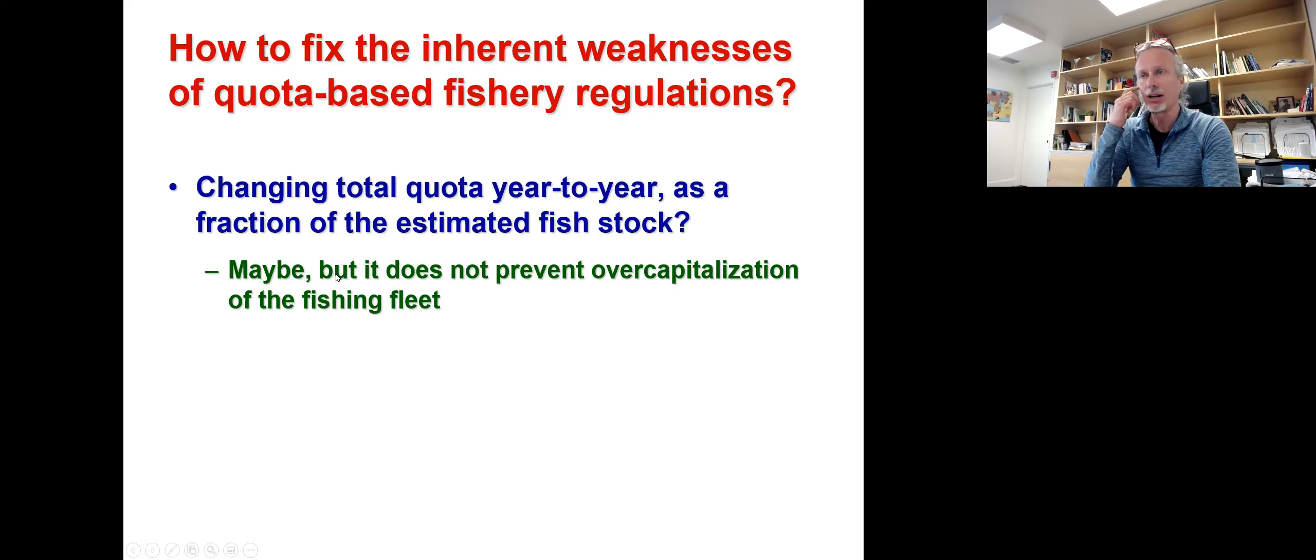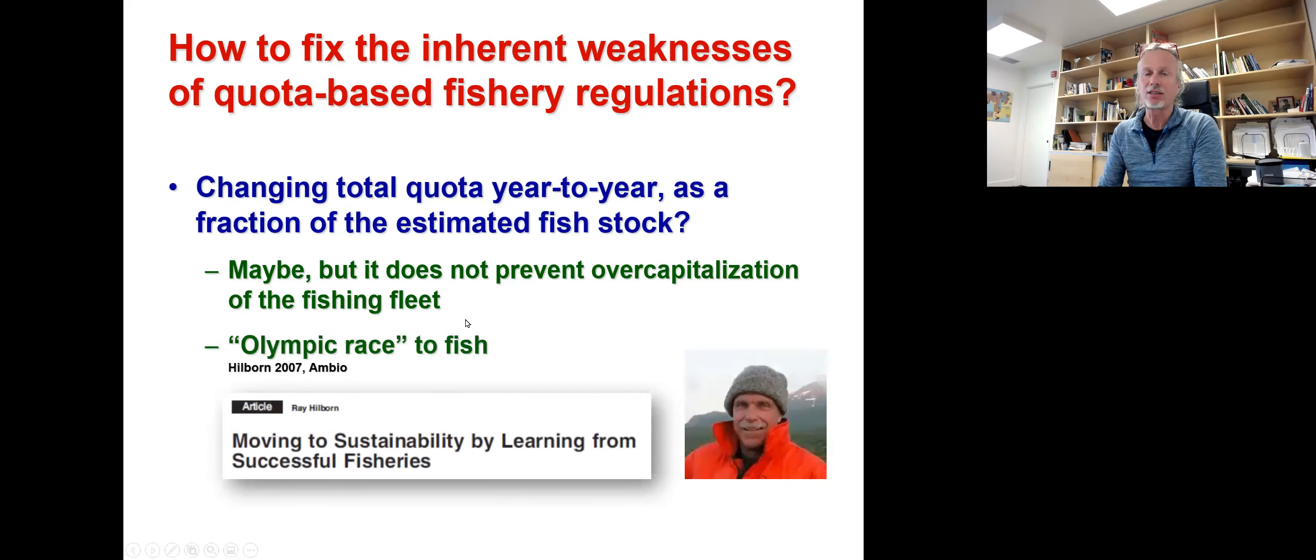In addition to that, it has been shown that using a total quota system does not prevent overcapitalization of the fishing fleet, which leads to what Ray Hilborn has referred to as an Olympic race to fish. The idea is that I tend to increment the effort, the fishing effort, the size of my fishing boats or the number of boats in my fishing fleet as much as I can. Because at the beginning of the fishing season, I need to go there and race and fish every single fish as fast as possible, because any fish left there a little bit longer will be fished by somebody else. So I need to improve my fishing effort in order to try to fish as much as possible, as soon as possible.